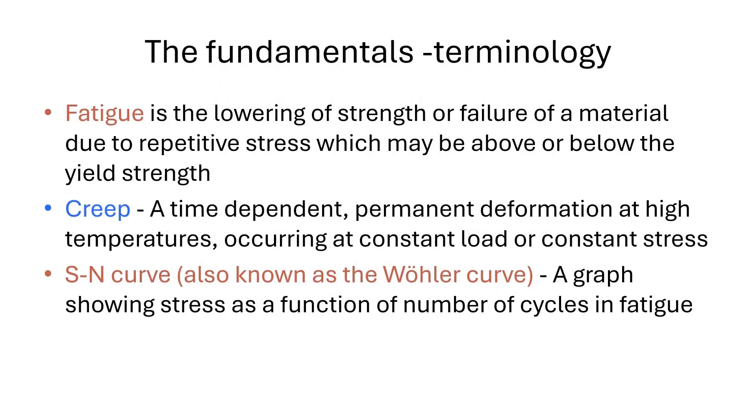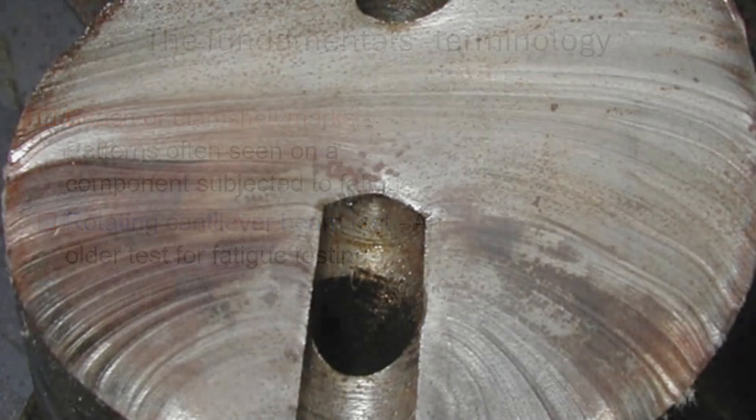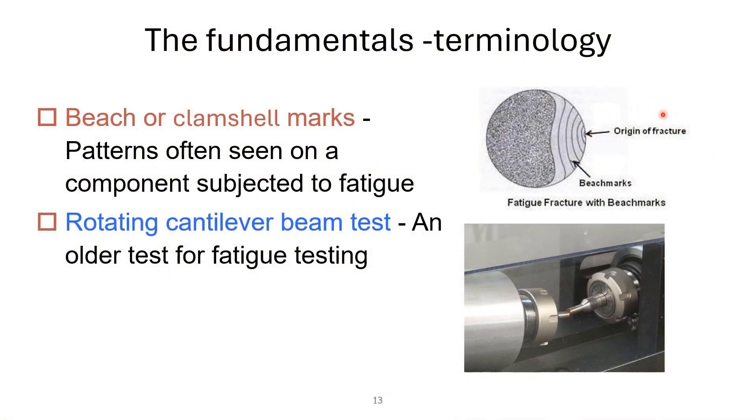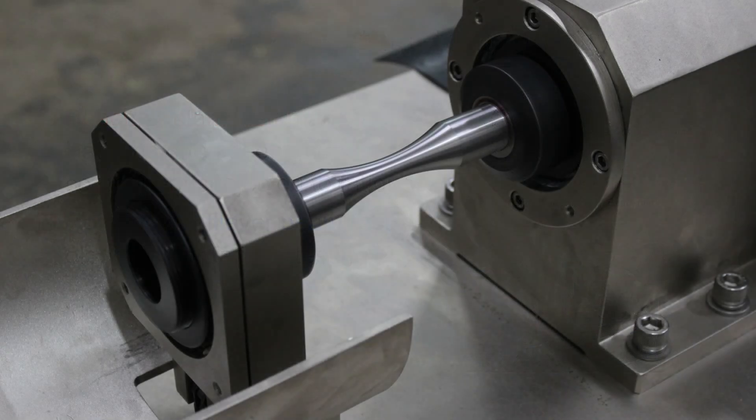And also we have beach or clamshell marks. That is the pattern that is often seen on a component subjected to fatigue. Like what we can see in the figure here, we have the origin of fracture and we have a beach mark pattern. So this is what we call beach or clamshell marks. And also we have rotating cantilever beam testing. This is a technique that's used for fatigue testing. Rotating beam fatigue test is one of the oldest methods used to determine materials' fatigue behavior.